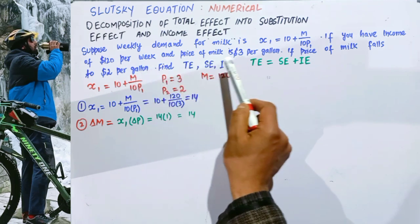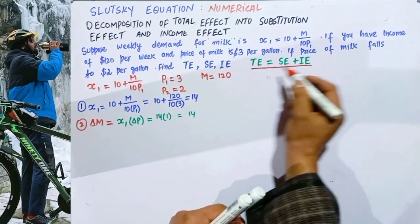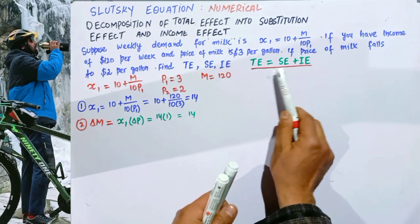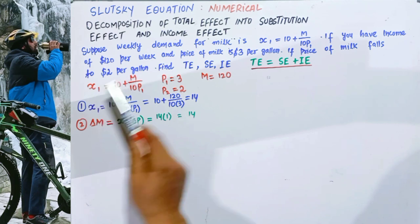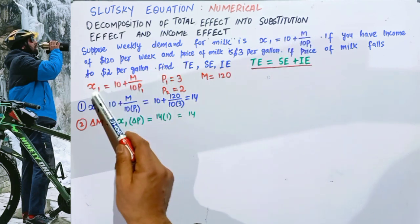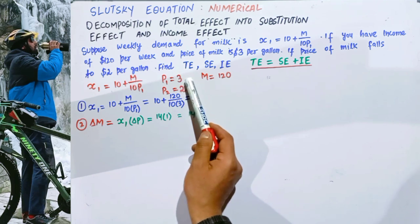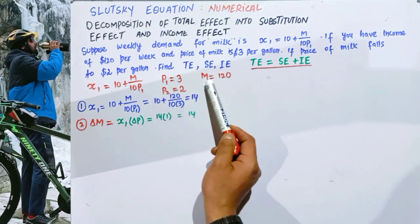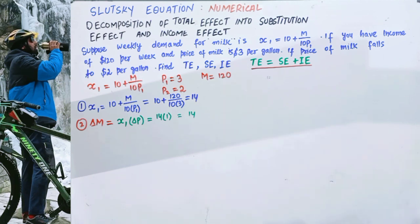We want to find the total effect (price effect) and decompose it into substitution effect and income effect using Slutsky's equation. We are given the demand function x1 = 10 + m / (10·p1). The initial price of milk is $3, the new price is $2, and the initial income of the consumer is $120.